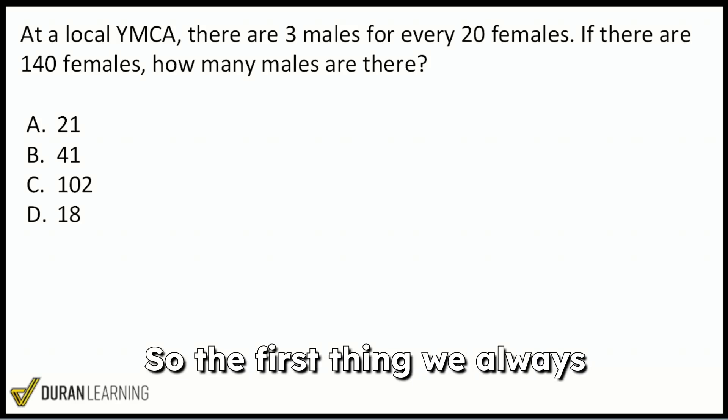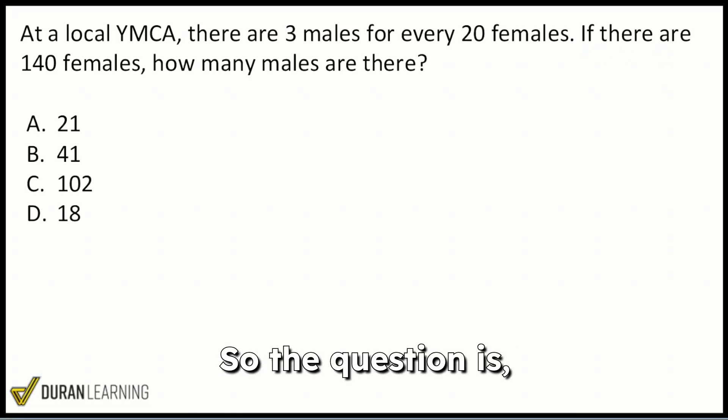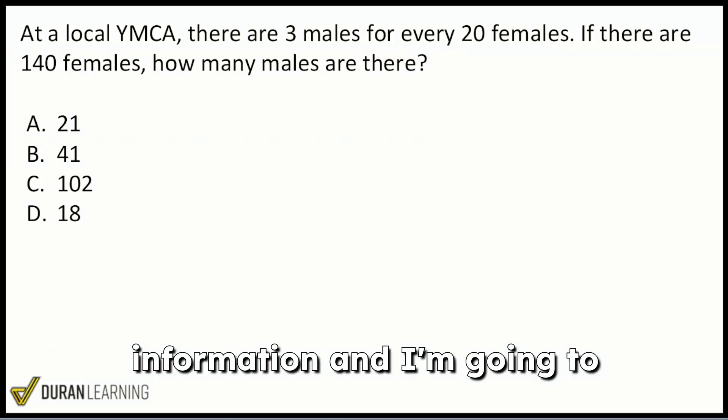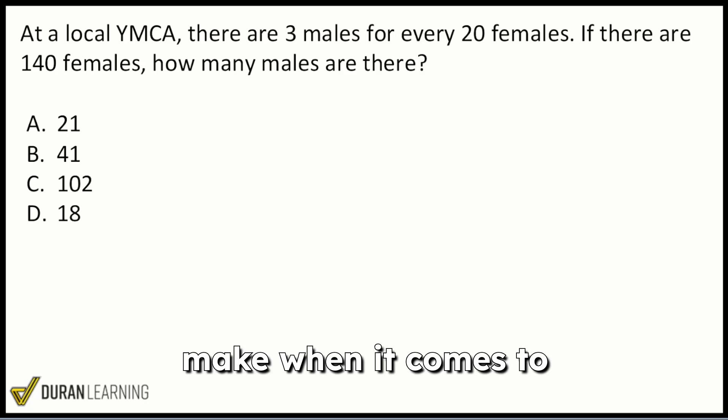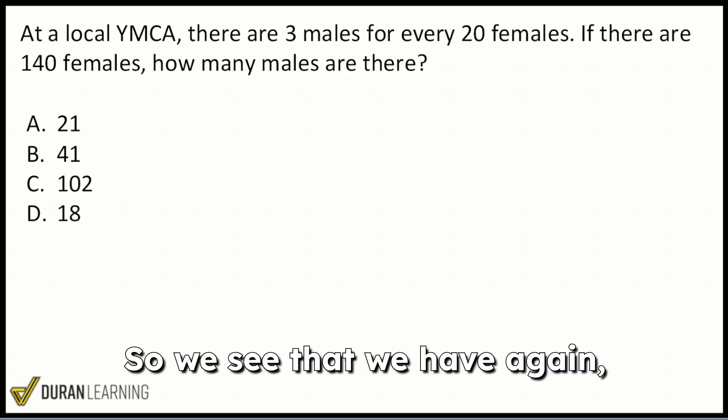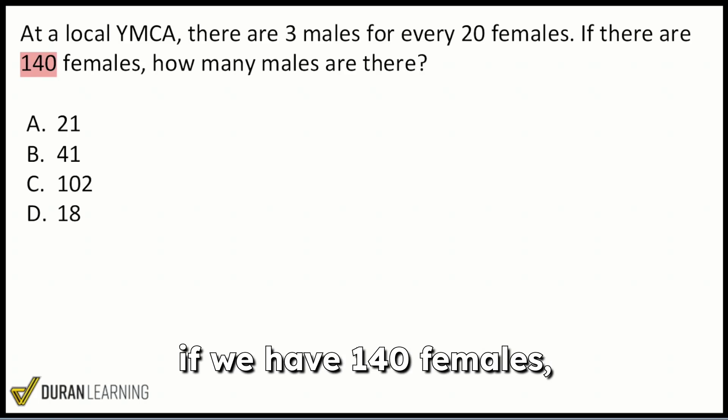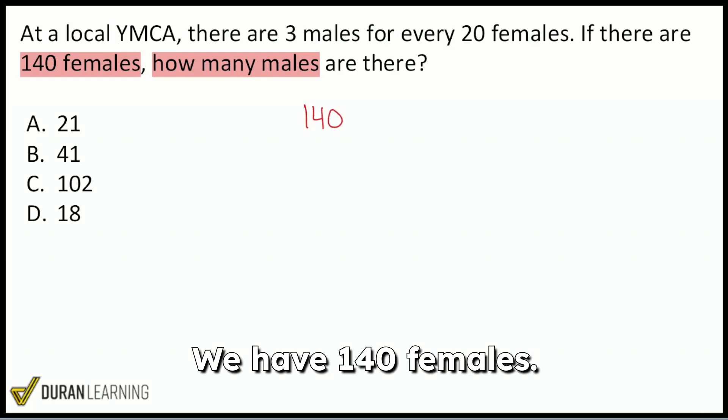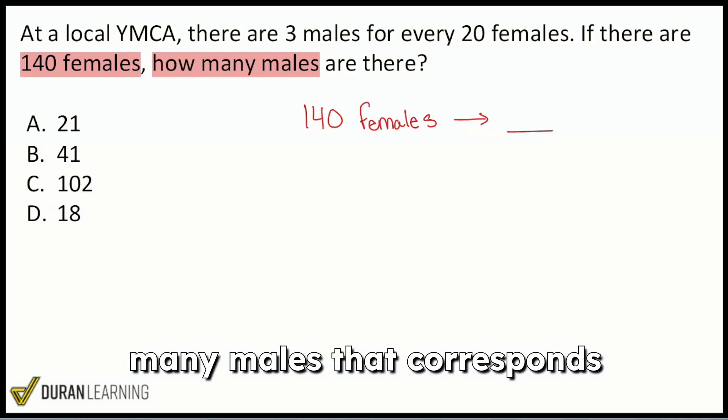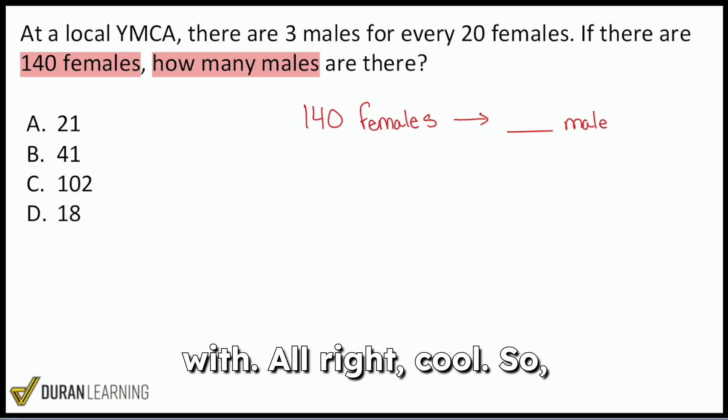But let's go ahead and get to this one here. So the first thing we always want to do is we want to read the question, but pretty much what I'm showing you here is going to be a proportion word problem. So the question is, if we have 140 females, how many males? So we'll just write down that information and I'm going to show you a pretty common mistake that a lot of people make when it comes to setting this up. So let's write that down. We have 140 females and then we want to know how many males that corresponds with.